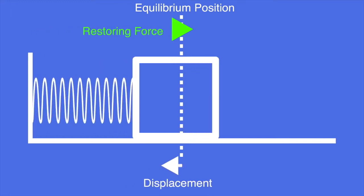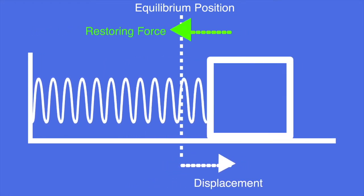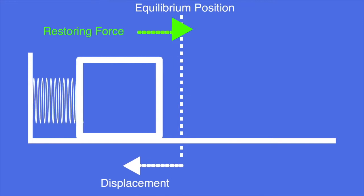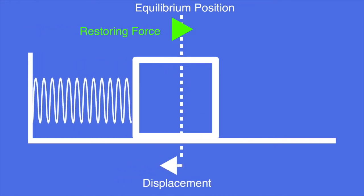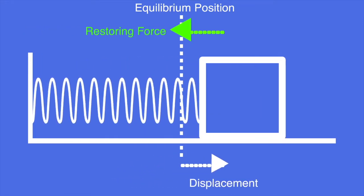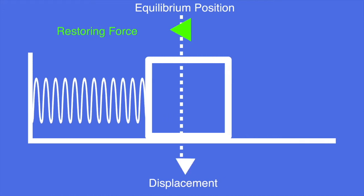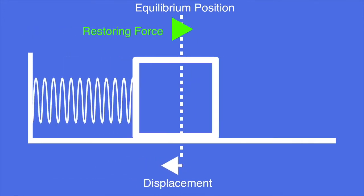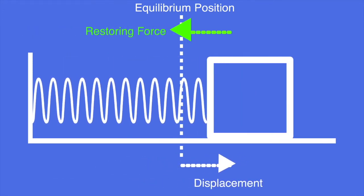When a spring is compressed or stretched, a force is exerted on it and its particles are displaced from their initial position. When a force causes a displacement, this means that work is done on the system.